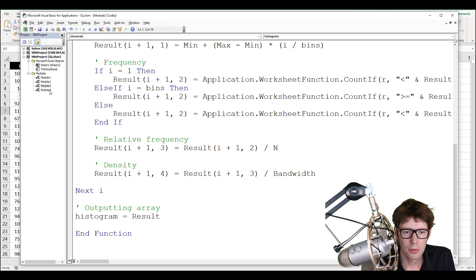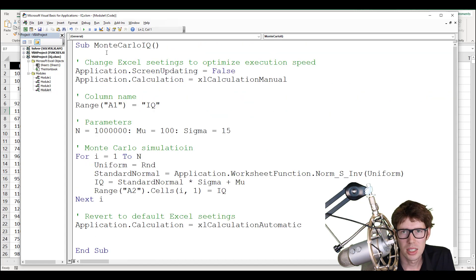So the main focus of this video is the Monte Carlo simulation, which is generating this IQ. So it is a subroutine, hence we write sub, unlike the two previous modules, which had function. We named it Monte Carlo IQ, open parentheses and parentheses, nothing interesting going on there.